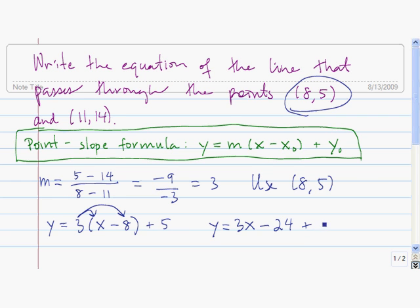And if we clean this up, we find that y is equal to 3x, negative 24 plus 5 is equal to negative 19, so 3x minus 19.